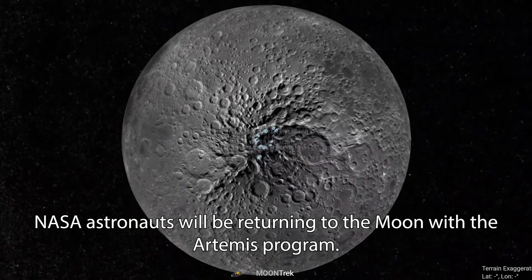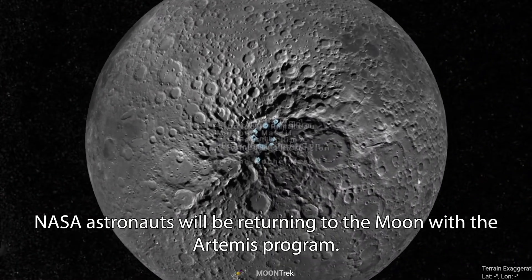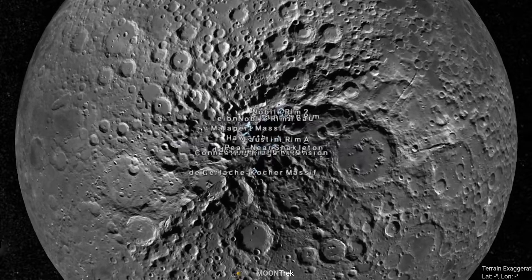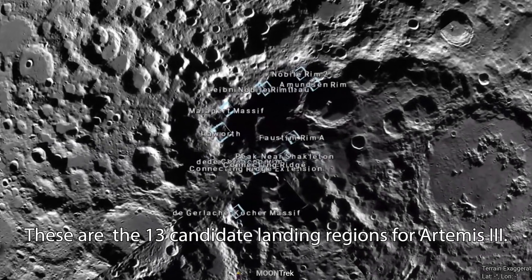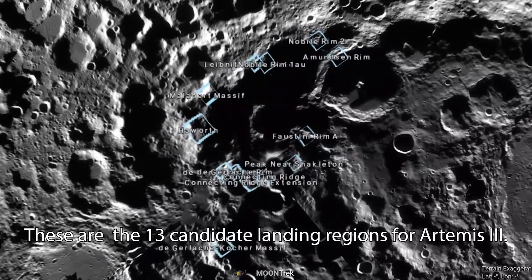NASA astronauts will be returning to the Moon with the Artemis program. These are the 13 candidate landing regions for Artemis III.